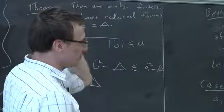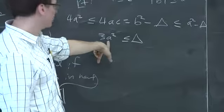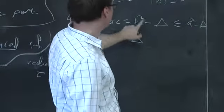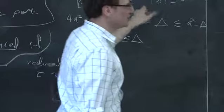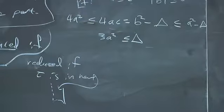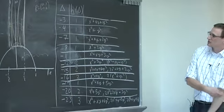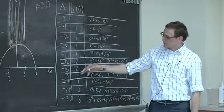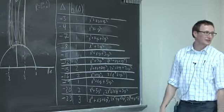Not only does that tell us there are only finitely many, it tells us exactly how to find all of them: look at all A's with 3A² ≤ −δ, then all B's with |B| ≤ A, then solve for C. You might start making a table — an exhaustive search. I copied this table out of the book.